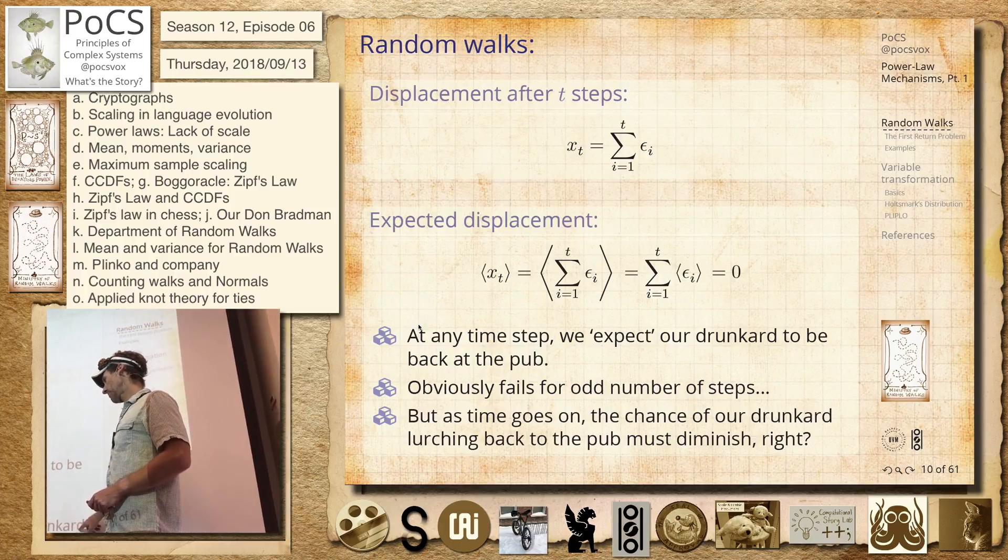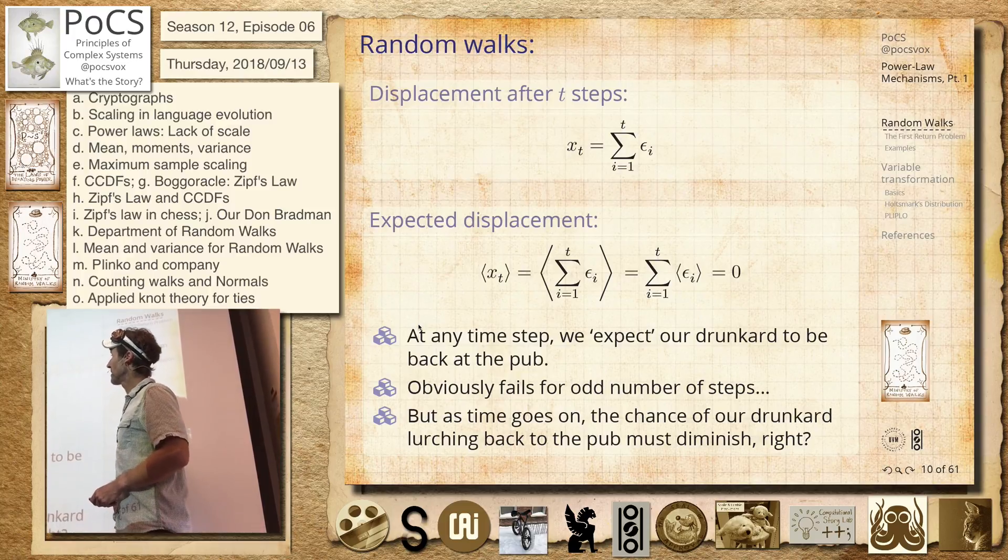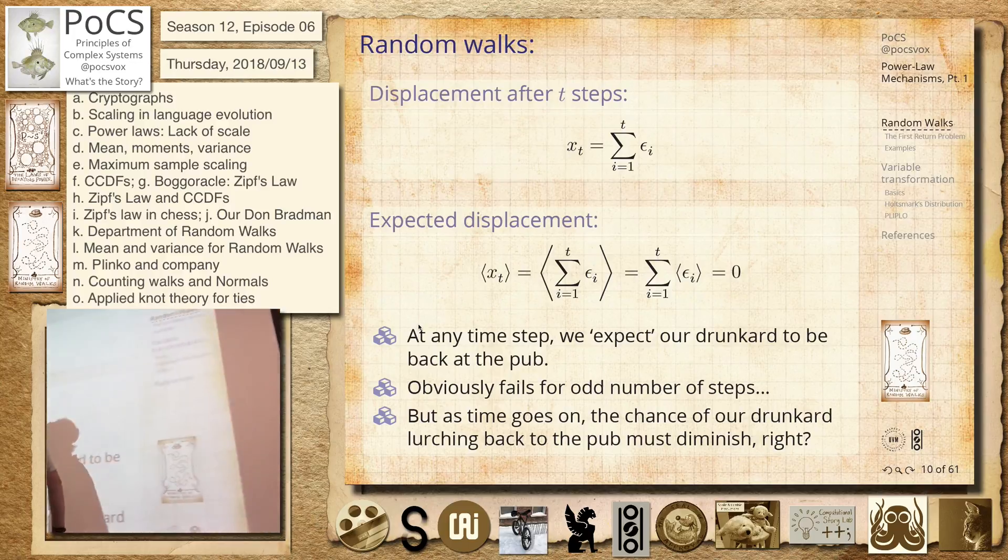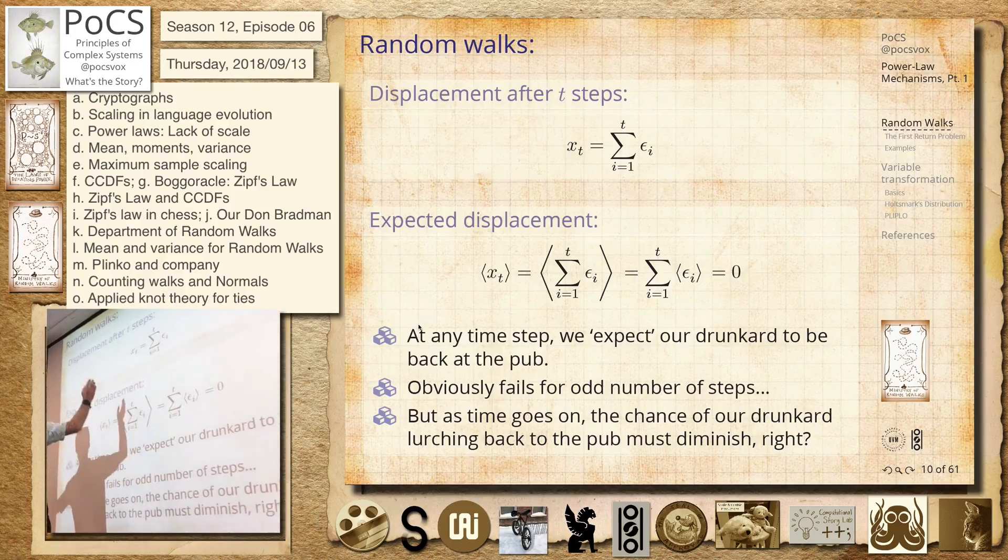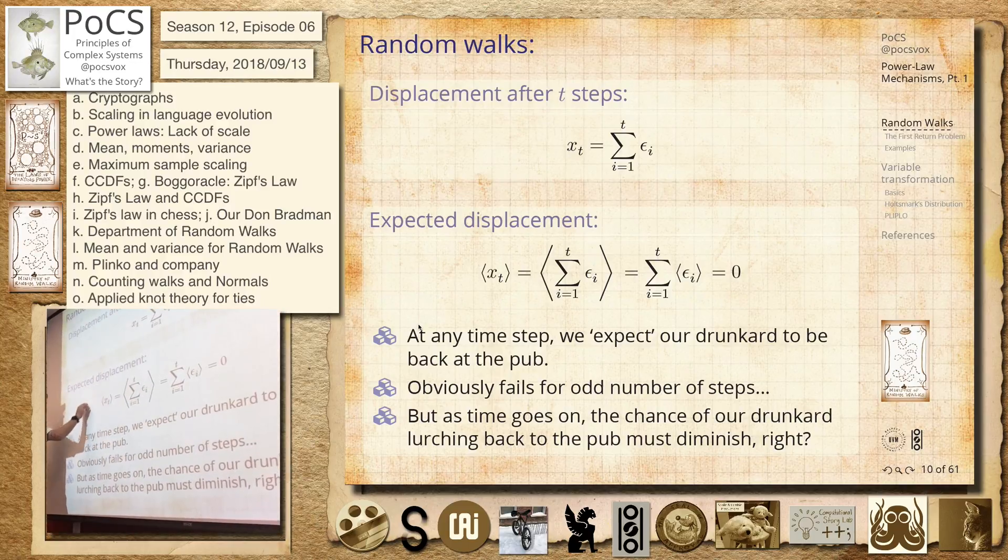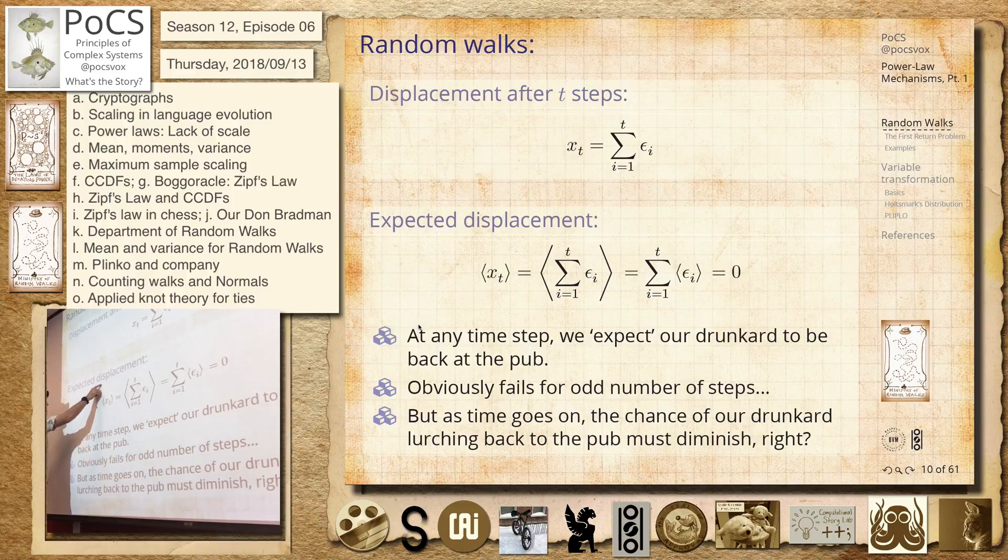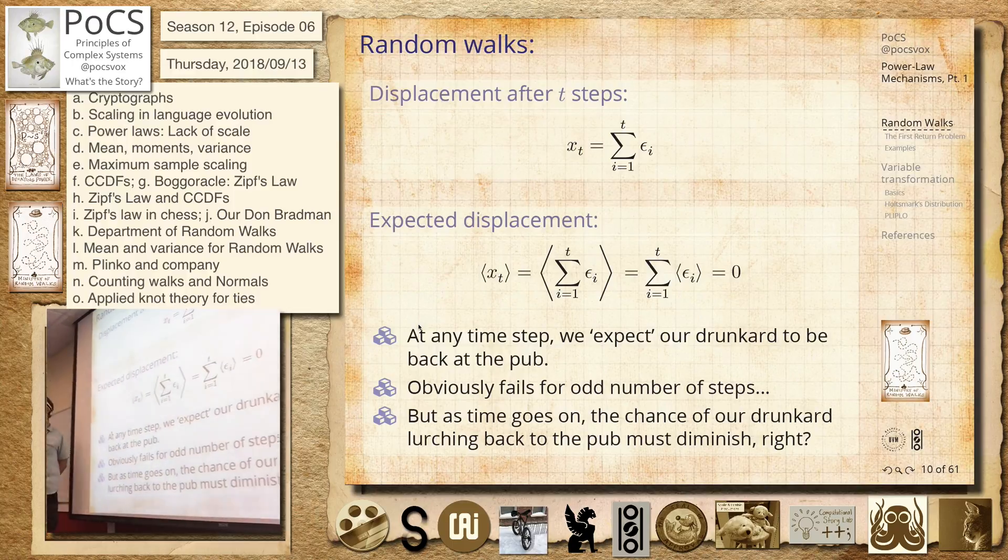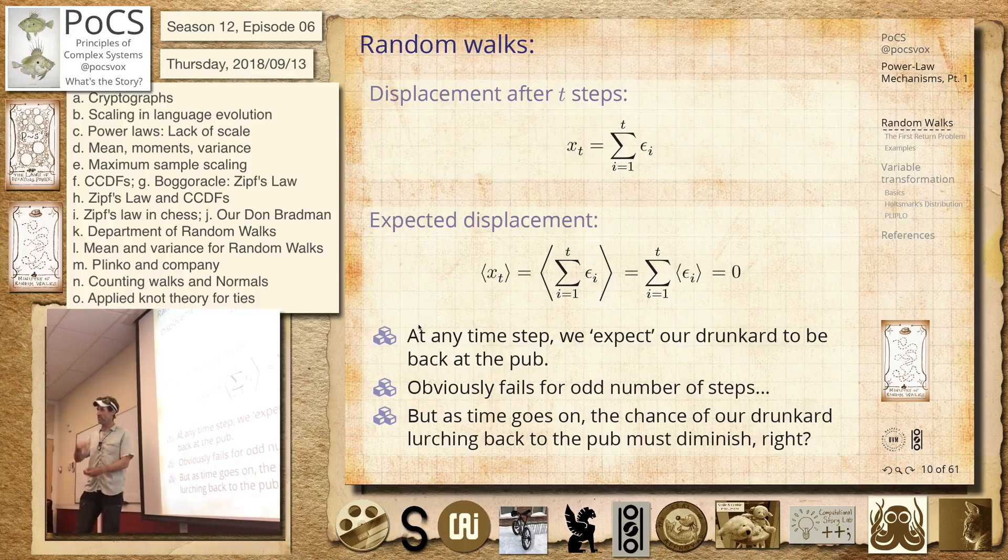So as time goes on, the chance of our friend coming home must sort of go down, you'd think. And what happens in two dimensions? So we can set off one in two dimensions, where they're on a grid. So here's home, and they start off on a Manhattan grid and wander around. They've got a quarter of a chance of going everywhere. And then we can do it in three dimensions.